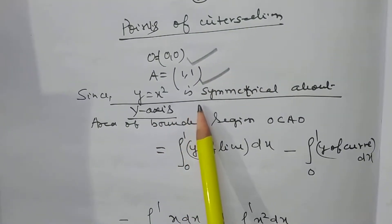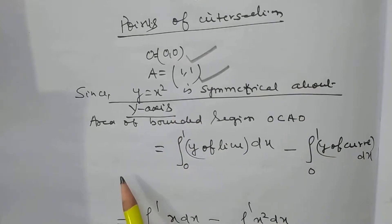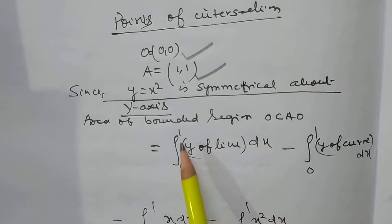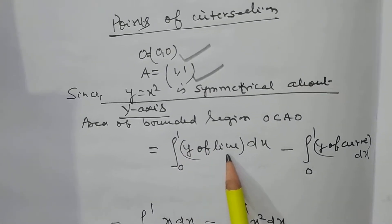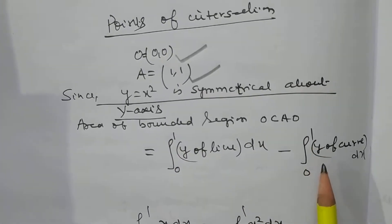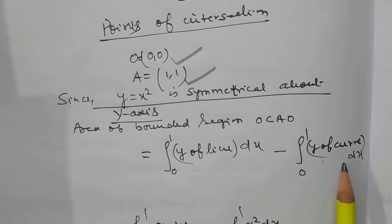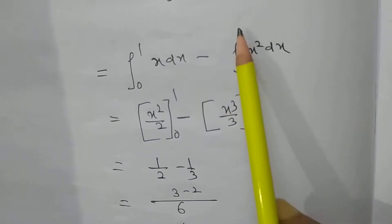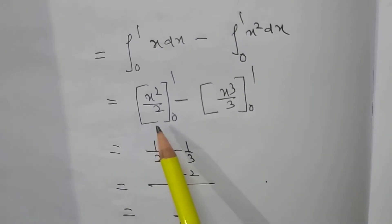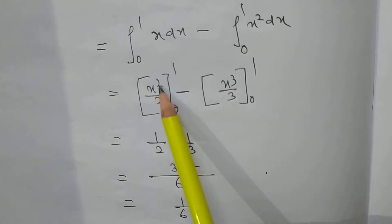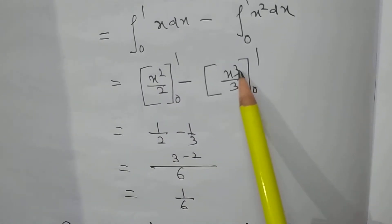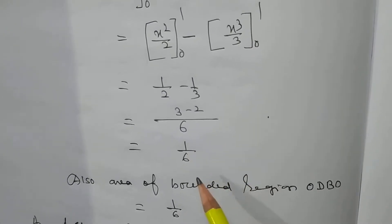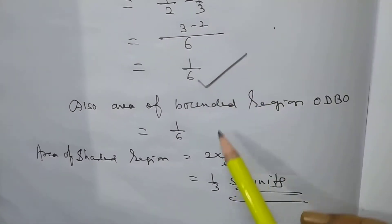Since y = x² is symmetrical about the y-axis, the area of bounded region OCAO is: ∫₀¹ y(line) dx − ∫₀¹ y(curve) dx = ∫₀¹ x dx − ∫₀¹ x² dx = [x²/2]₀¹ − [x³/3]₀¹ = 1/2 − 1/3 = 1/6.